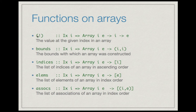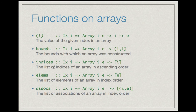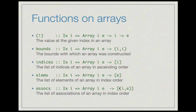Here are some more functions on arrays. (!) :: Ix i => Array i e -> i -> e gives the value at a given index. bounds :: Array i e -> (i, i) returns the lower and upper bounds with which the array was constructed. indices :: Array i e -> [i] lists the indices in ascending order. elems :: Array i e -> [e] produces the list of all elements in index order. assocs :: Ix i => Array i e -> [(i, e)] lists all associations in ascending order of index.